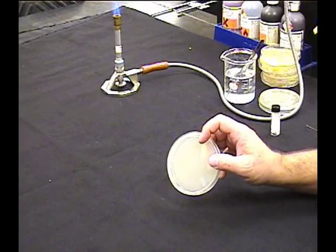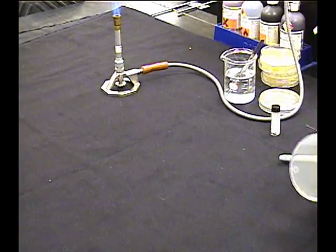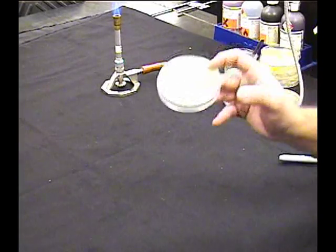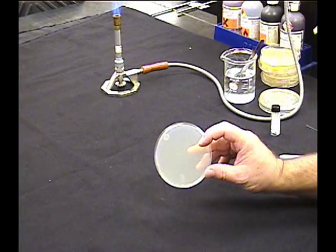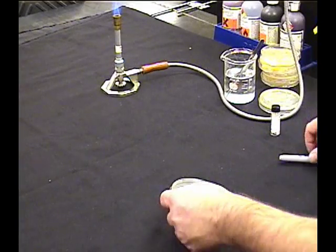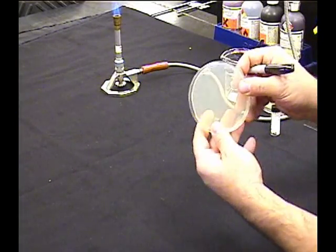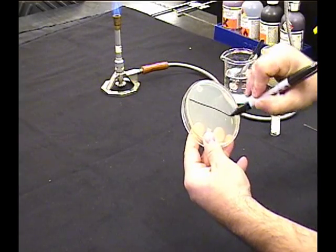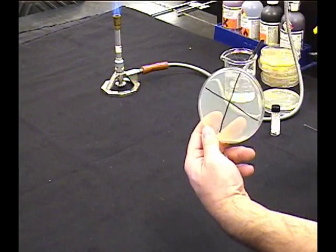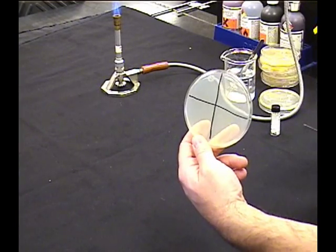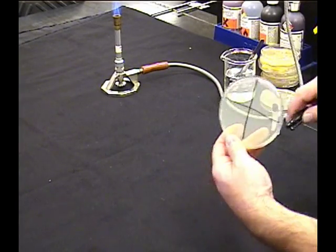In this case, we're going to test it. In order to test it, first of all, we need a TSA plate, just like we had before. But what we're going to do this time is divide it into quadrants. We're going to divide it into four. Just take a sharpie, draw an X on the bottom. Makes life easy.